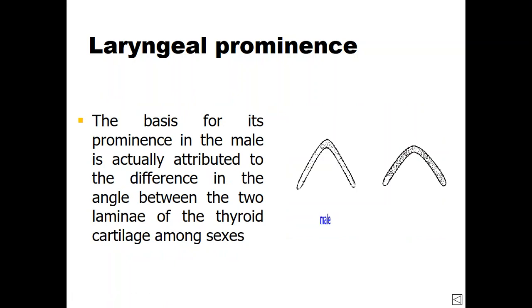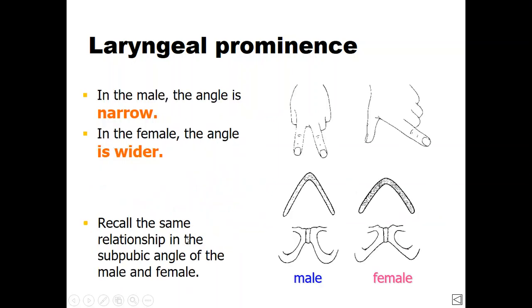The difference between male and female angulation — the angle of fusion between the two laminae of the thyroid cartilage — is evident in the picture. In females, the angle is wider, so the cartilage is not prominent in the anterior part of the neck, while in males it is more prominent and tapered. We can even see and palpate it on the neck. This can be demonstrated using the thumb and index finger widely separated to represent the female angle.